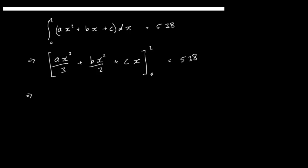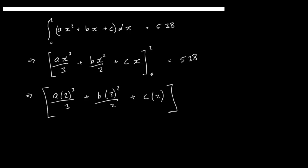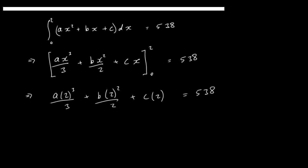We just concentrate on substituting x equals 2: a times 2 cubed over 3, plus b times 2 squared over 2, plus c times 2. We're subtracting 0 from the lower bound, so we work this out directly. That gives us 8 over 3 a, plus 2b, plus 2c, and that's equal to 538.